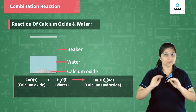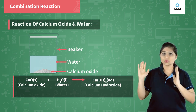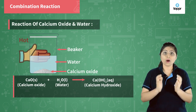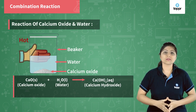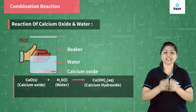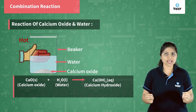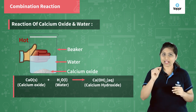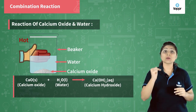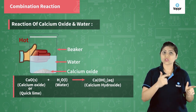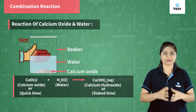After the experiment, when I touch the apparatus, it is warm — remember this observation for coming lessons. Coming back to our equation: calcium oxide plus water gives calcium hydroxide. Calcium oxide is also known as quicklime, and the calcium hydroxide formed is also known as slaked lime.